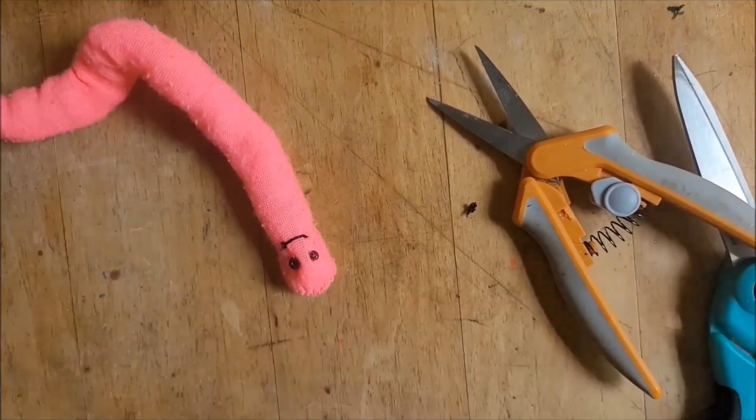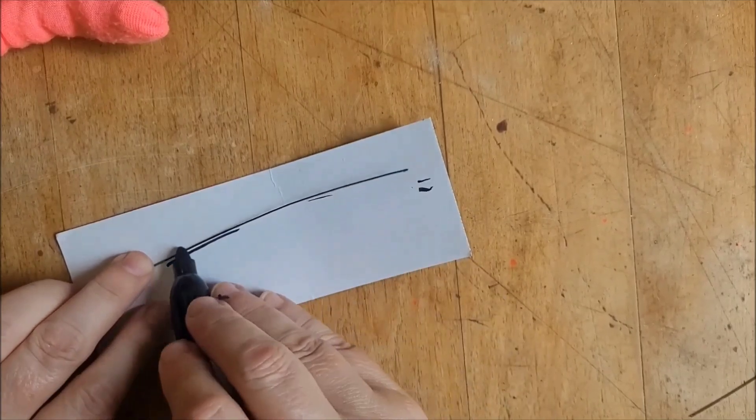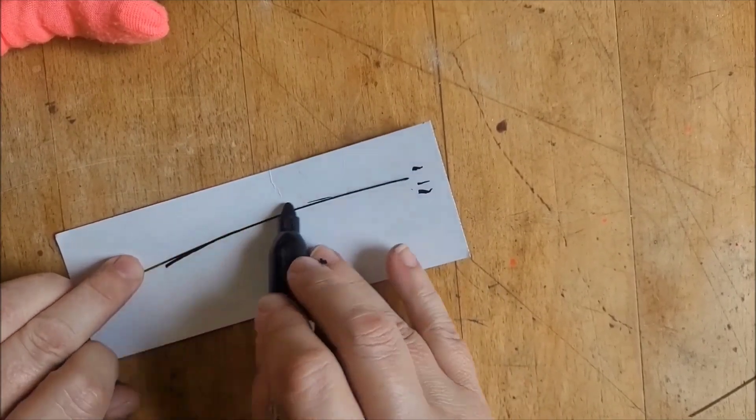To make the little eyeglasses, I'm taking some florist wire, that's just what I had on hand, and I'm coloring it with a black permanent marker.